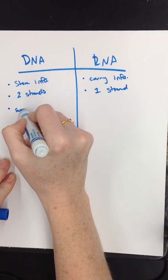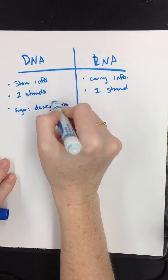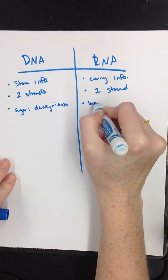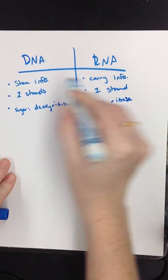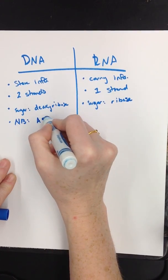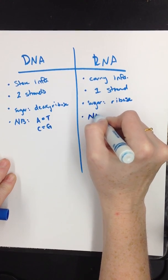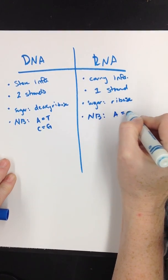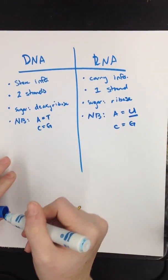The sugar here for DNA is deoxyribose. And my sugar here in RNA is ribose. Another difference. Nitrogen bases. A's and T's go together here. C's and G's. Versus in my RNA. Nitrogen bases. A's pair with U. But C's still go with G's.